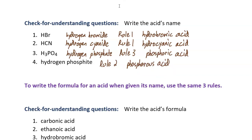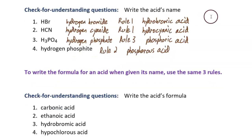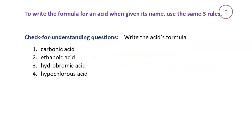What you were just practicing was writing the name of an acid when given its formula. We can do the reverse process: write the formula when given its name. To do this, use the same three rules. Here are some check for understanding questions. Write the acid's formula by applying those rules. I'll pause the video, and then we'll discuss them.